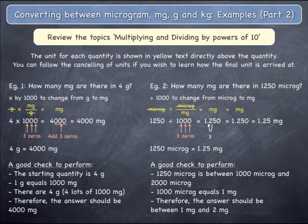As a final check, look at your starting quantity of 1,250 micrograms, which is between 1,000 micrograms and 2,000 micrograms. 1,000 micrograms equals 1 milligram, and therefore you expect an answer of between 1 milligram and 2 milligrams.